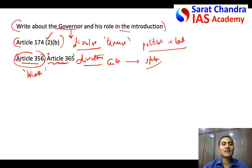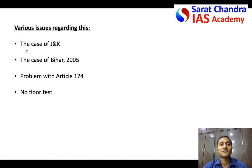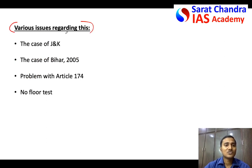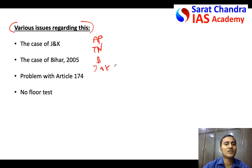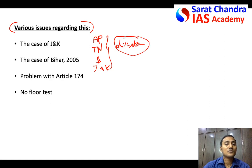As you can see, the Constitution does not clearly put any guidelines — it has given only a broad framework within which the Governor can act with discretion. The actual question is about the various issues regarding this dissolving of the assembly. When describing those issues, it is better to give examples — for example, how Governors dissolved the AAP legislative assembly, Tamil Nadu legislative assembly, Bihar, Jammu and Kashmir, and so on.